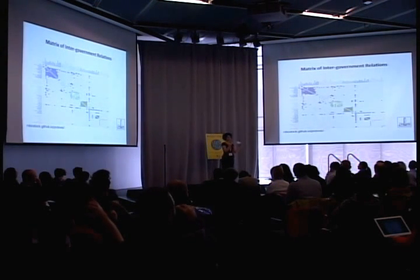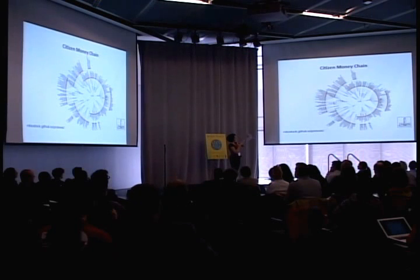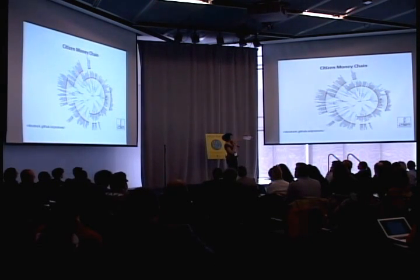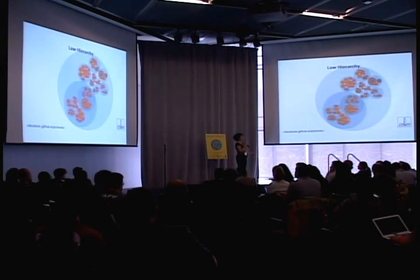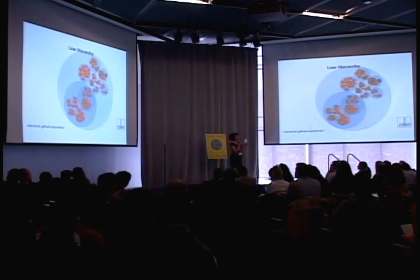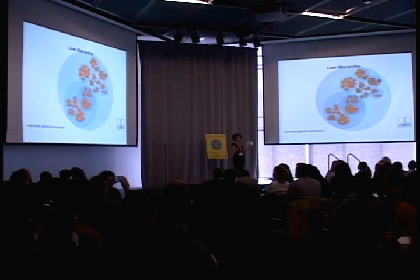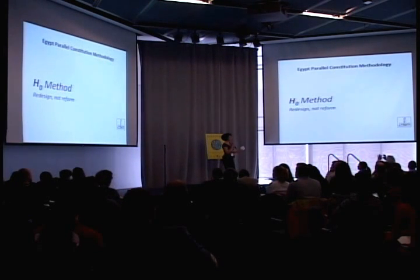We're developing a model — basically we're trying to draw the constitution — where we can show the power locus: where is the power locus in the constitution, and where is the citizen's money going? For example, if they're looking for decentralization, they can see if their money is going to the central government or local government. In terms of law hierarchy, it helps you troubleshoot — if your rule of law is not working, it helps you trace the tree of law so you understand which law is giving you a problem.